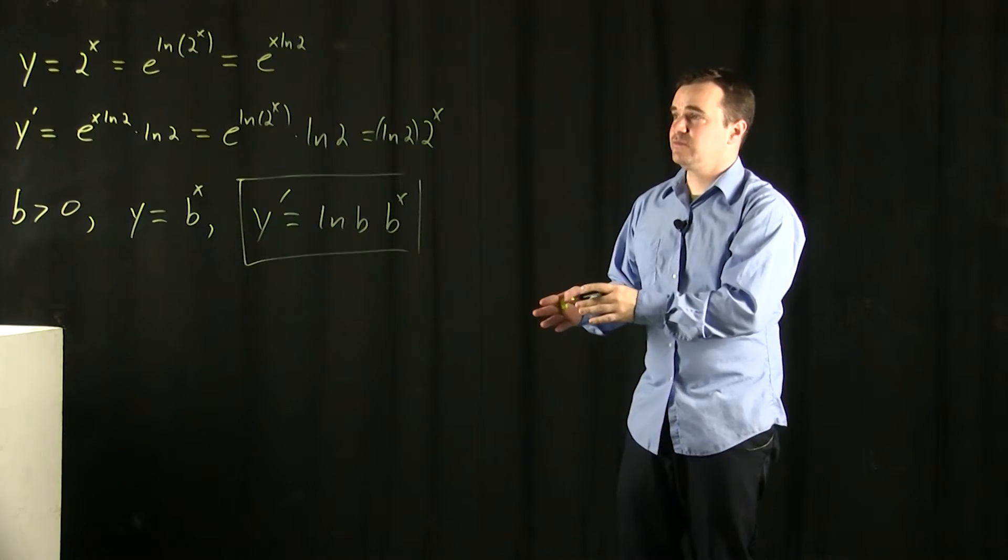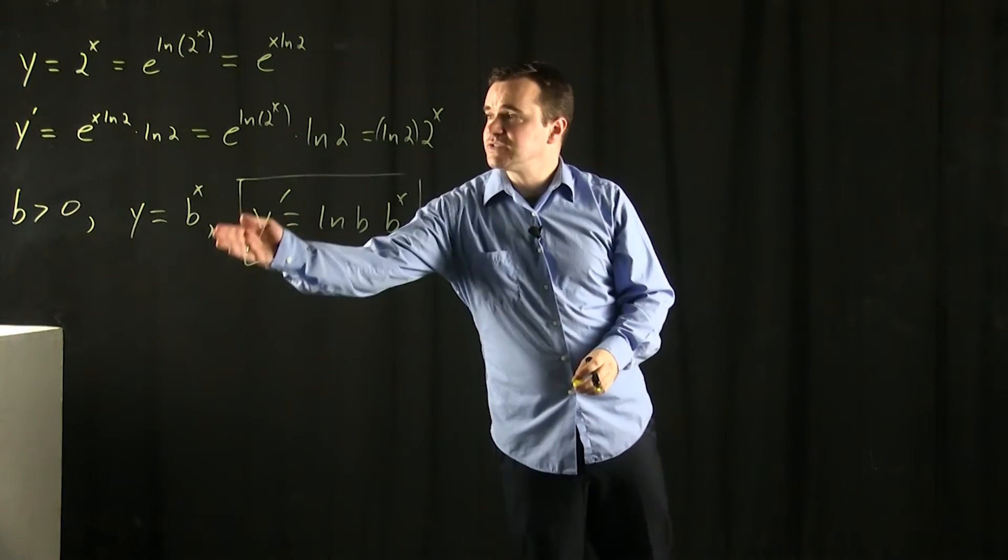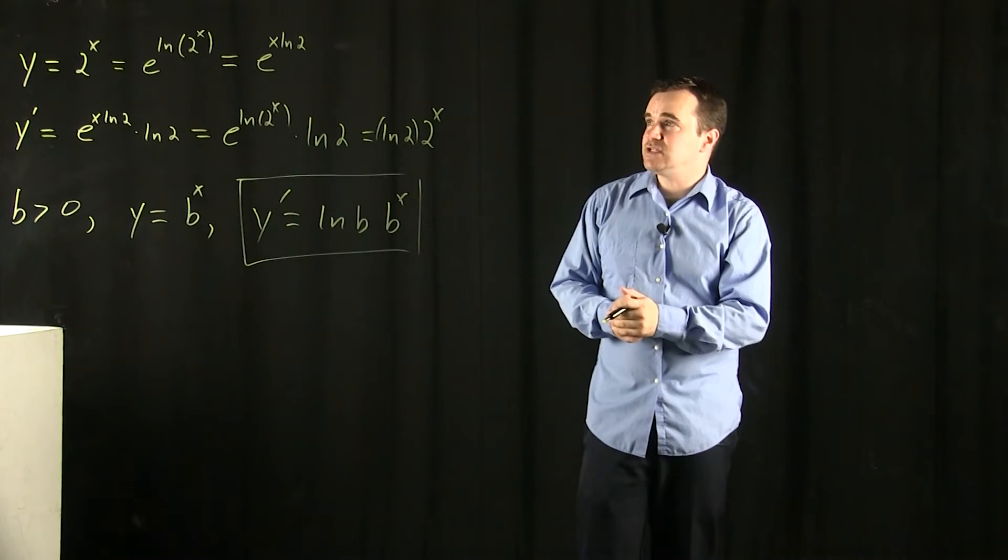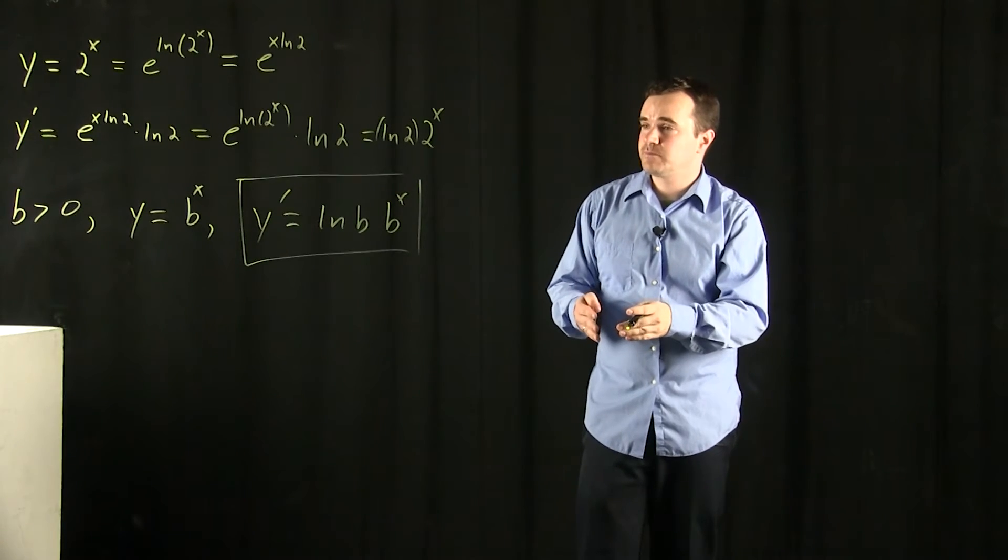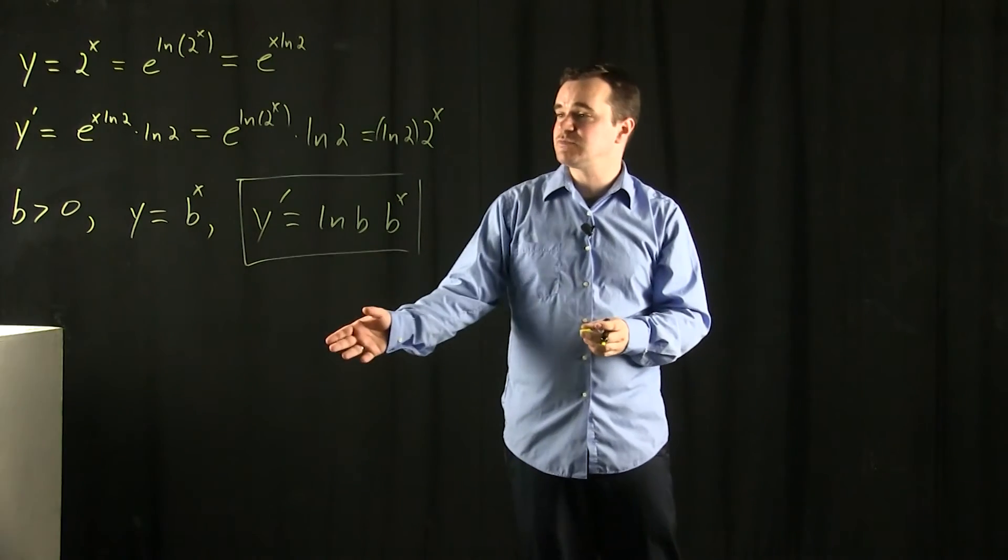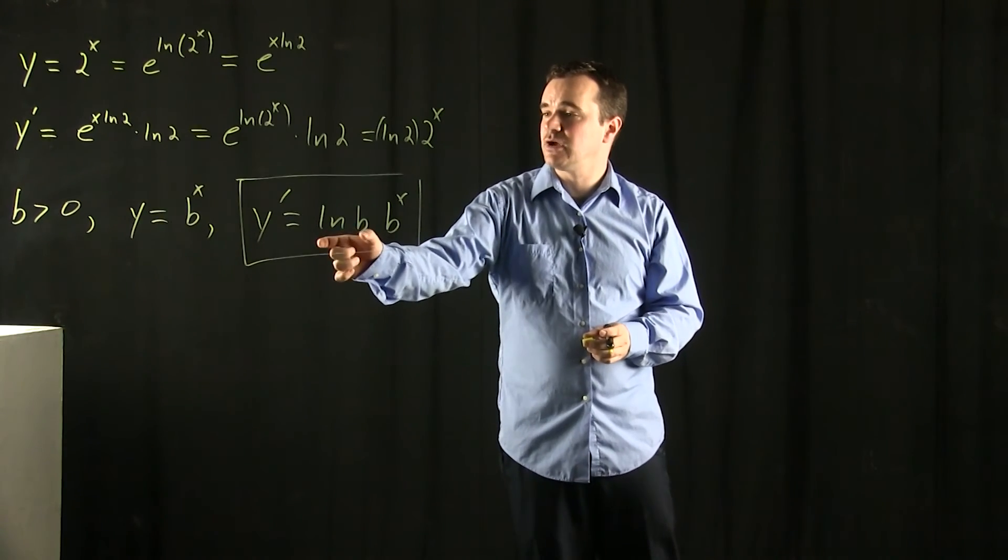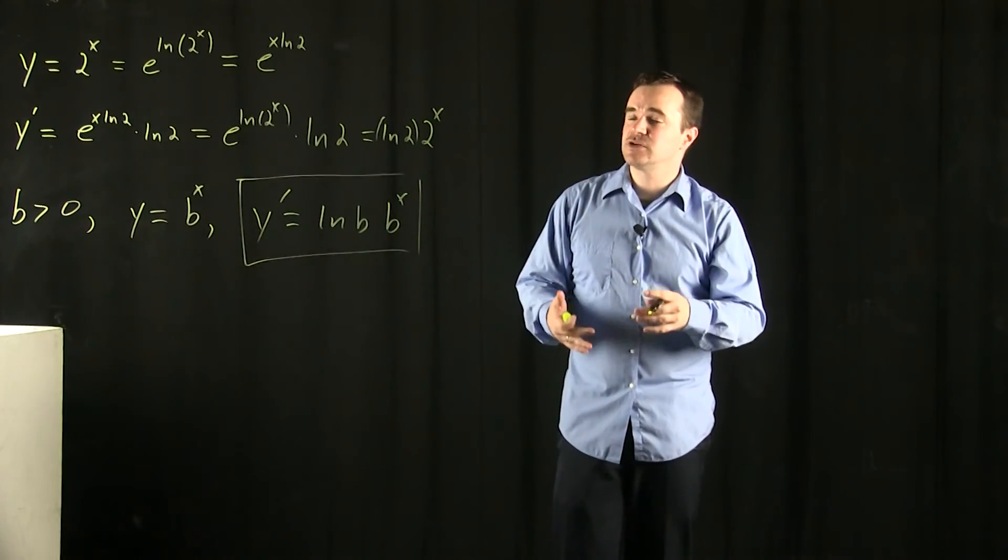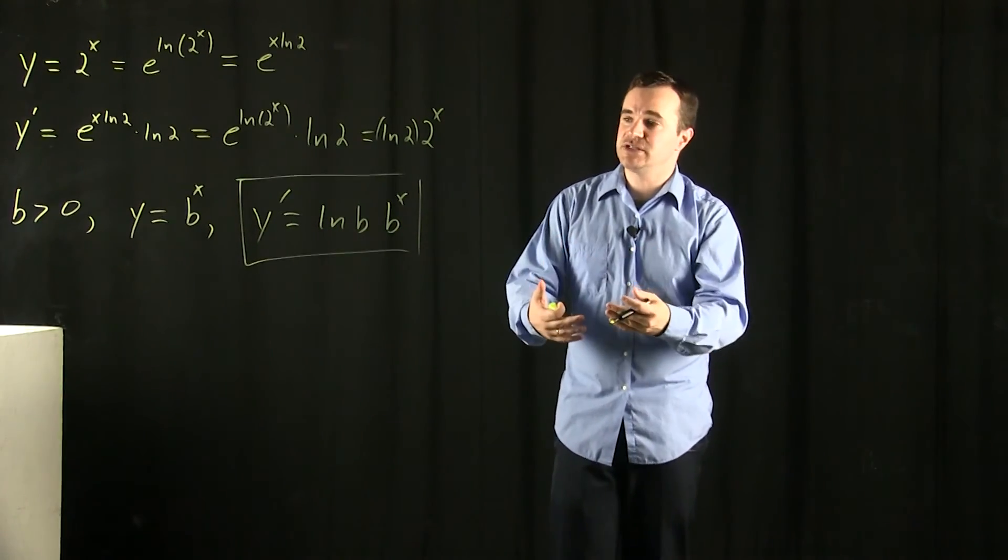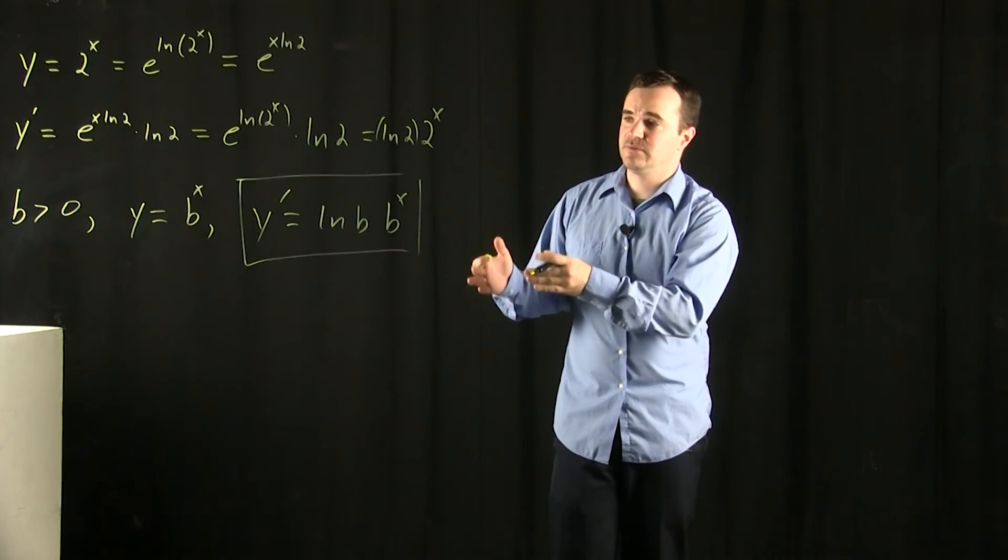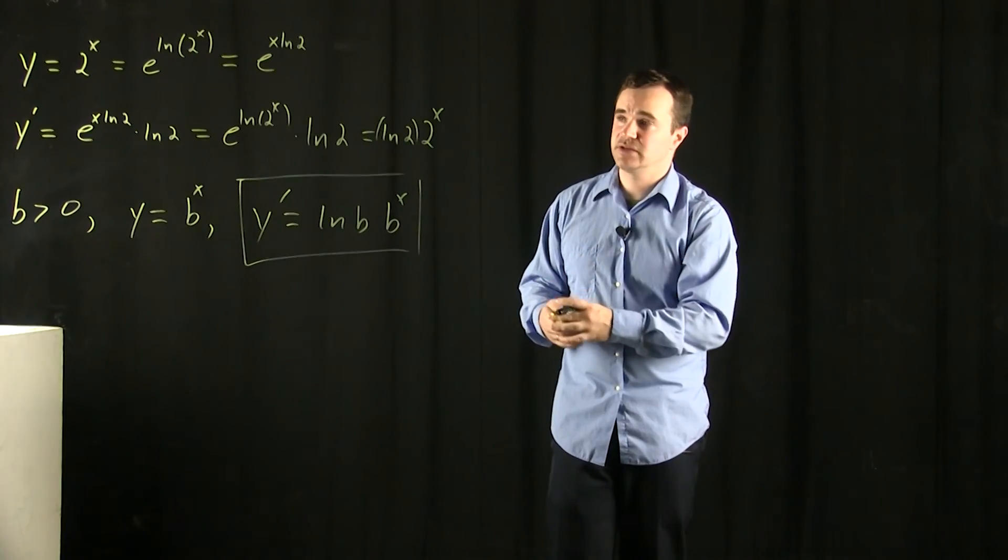How do you take the derivative of a constant raised to the x power? And if you go back to thinking about e to the x instead of 2 to the x, this formula still works because you're going to get natural log of e, which is equal to 1, times e to the x. So this is what we call a generalization of the formula derivative of e to the x equals e to the x.